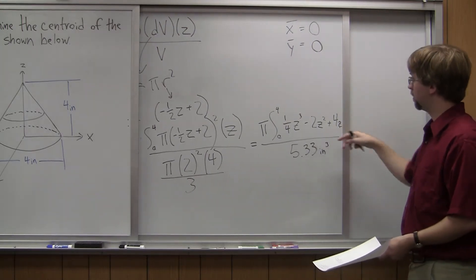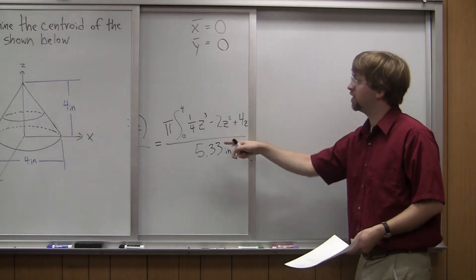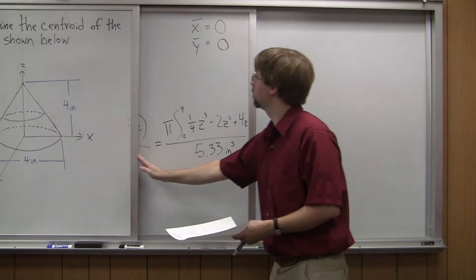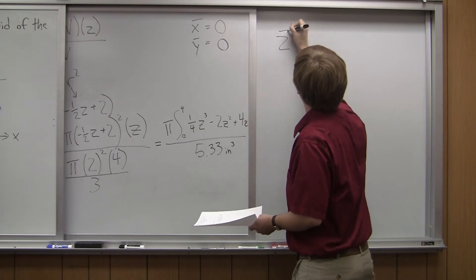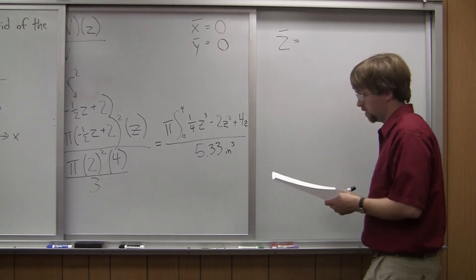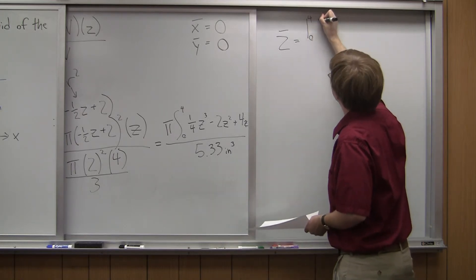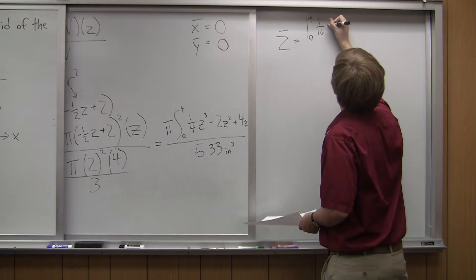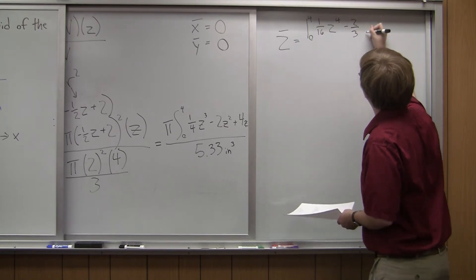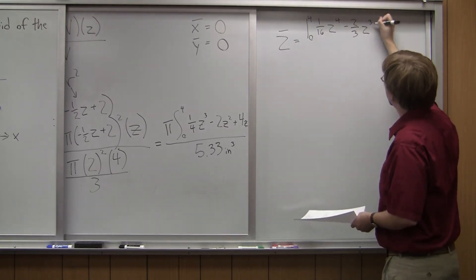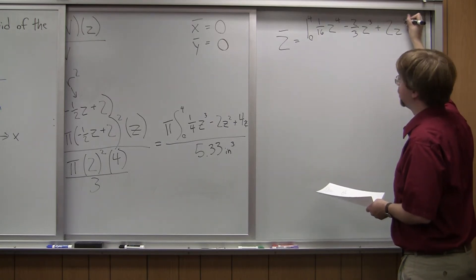All right. So now I need to keep going with this z formula here. So if I go ahead and I take the integral, I'm going to take the integral of this function here. That's going to be equal to, so this is z-bar is equal to, evaluated from zero to four. And I've got one over 16 times z to the fourth minus two thirds times z to the third plus two times z squared.